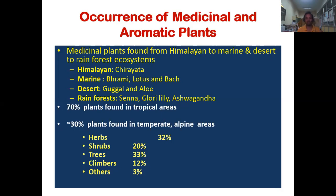Based on plant habit classification of the 9,500 medicinal plant species: 32% are herbs, 20% are shrubs, 33% are trees, 12% are climbers, and 3% are others.